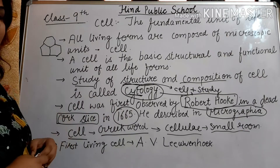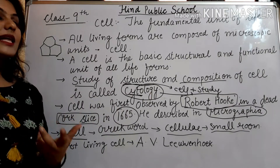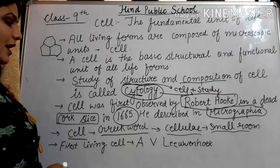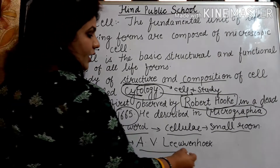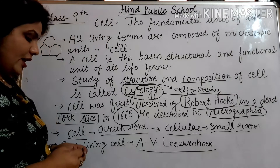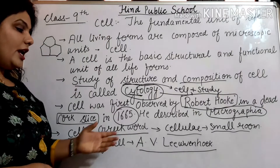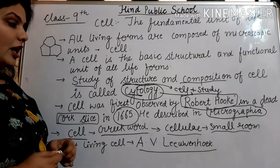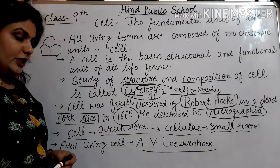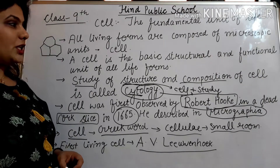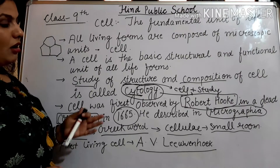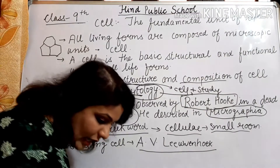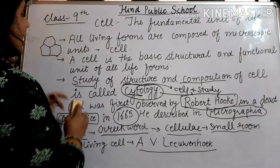Yeh thi baat dead cell ki. Iske baad living cell sabse pehle kisne khoji? Living cell sabse pehle khoji Antonie van Leeuwenhoek ne. Ek jeevit koshi ka khoj ki. Antonie van Leeuwenhoek ne isko 1805 ke aaspaas khoja — aur kahan khoja? Ek talaab mein.